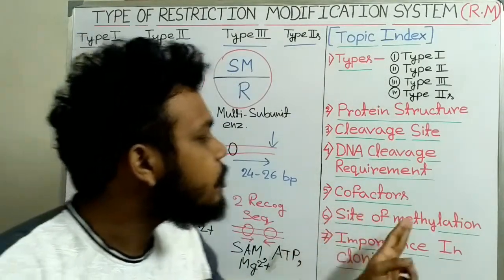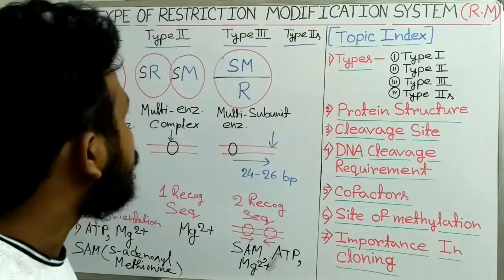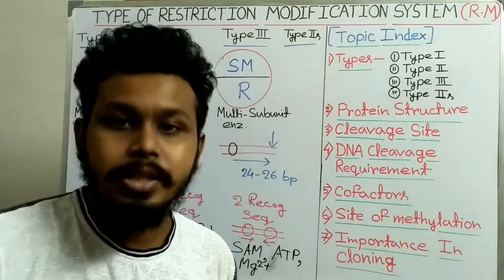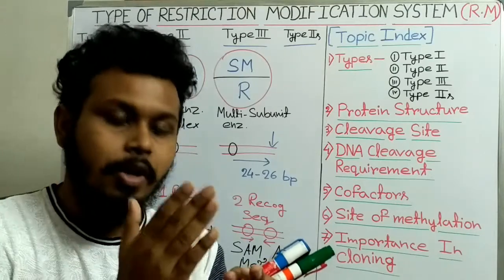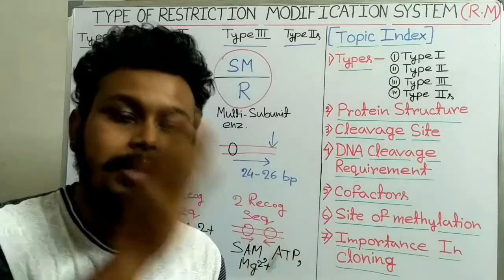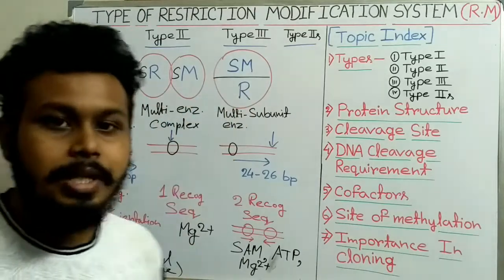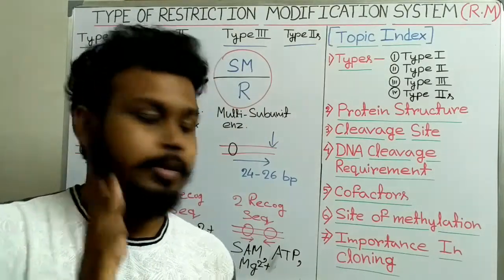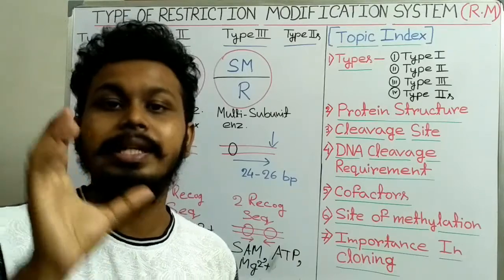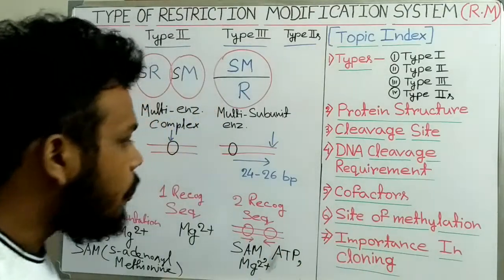The next property is the site of methylation — where the modification by methylation is done in the DNA. For all three types of restriction enzymes, the site of methylation is the recognition site. All three types recognize a sequence, and the modification is done at that recognition sequence — but only when the DNA is the bacterium's own genomic DNA.